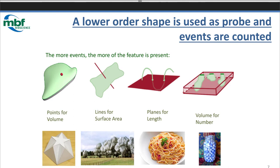What can be estimated? We can estimate volume using points. We can estimate surface of membranes using virtual lines. We can estimate length of blood vessels or neuronal processes using virtual planes. And to estimate number of cells, we have to be in a three-dimensional situation. This shows a dissector for the optical fractionator, so we can estimate number of particles in a 3D situation.